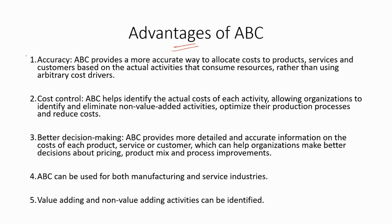Now let's discuss the advantages of activity-based costing. Accuracy: ABC provides a more accurate way to allocate costs to products, services, and customers based on the actual activities that consume resources, rather than using arbitrary cost drivers. Cost Control: ABC helps identify the actual costs of each activity, allowing organizations to identify and eliminate non-value-added activities, optimize production processes, and reduce costs. Better Decision Making: ABC provides more detailed and accurate information on costs of each product, service, or customer, helping organizations make better decisions about pricing, product mix, and process improvements. ABC can be used for both manufacturing and service industries, and value-adding and non-value-adding activities can be easily identified.